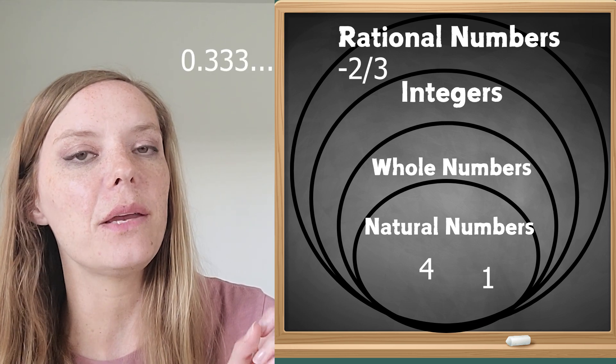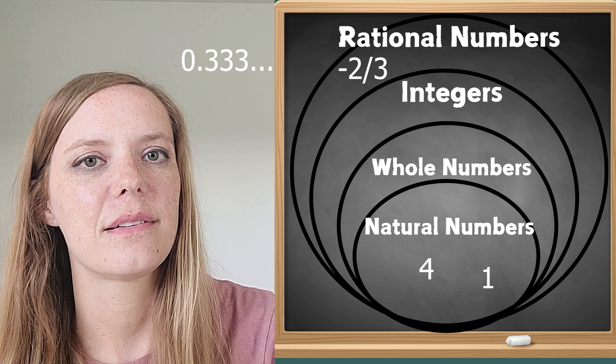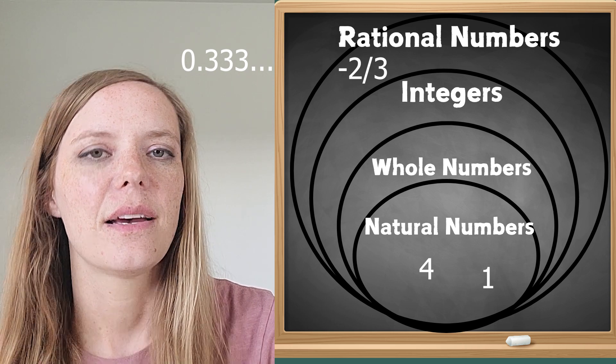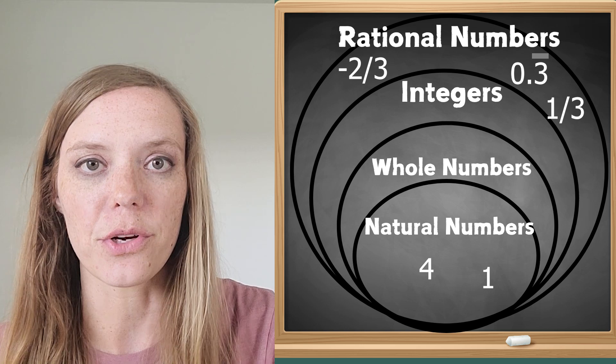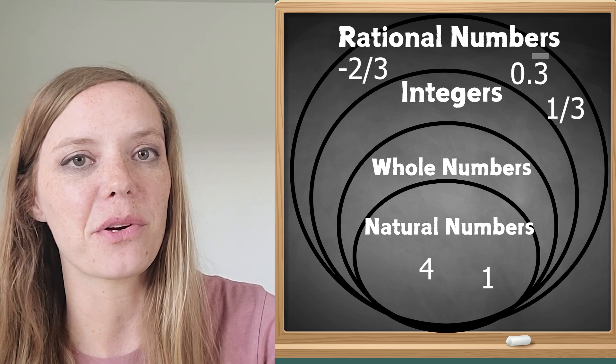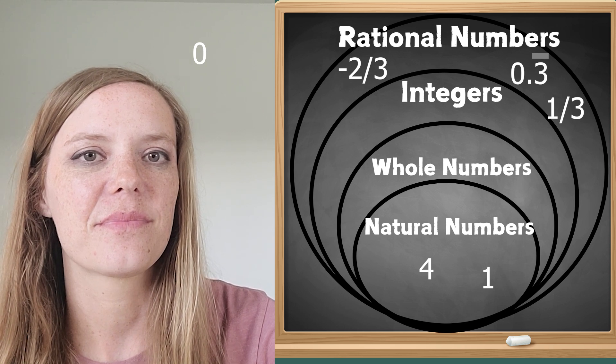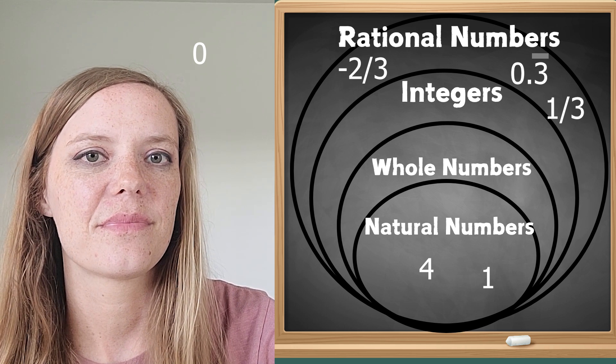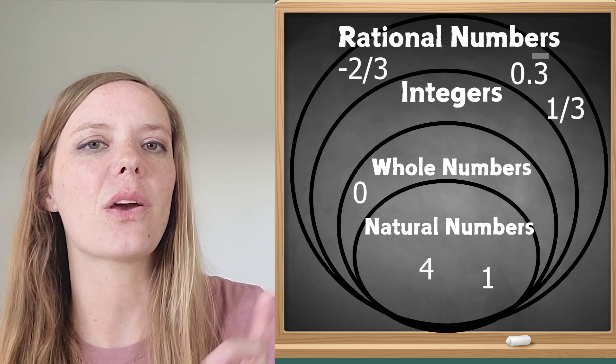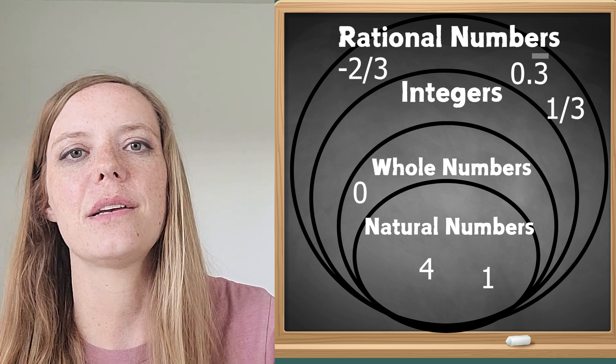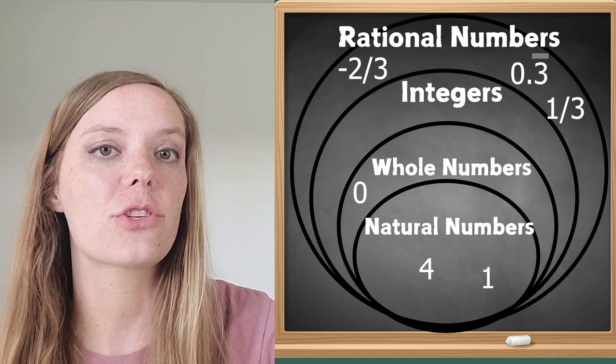How about 0.3 repeating? Okay that can be written in a fraction form also as one-third so we're going to put that in rational numbers. Okay how about zero? All right you got it. That can go in whole numbers since it's greater than or equal to zero. How about the fraction one-third?